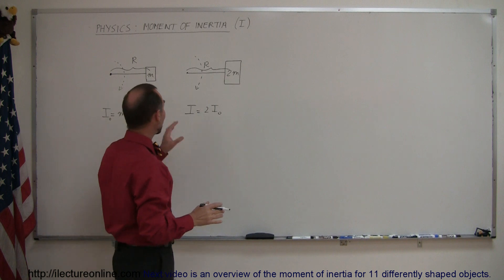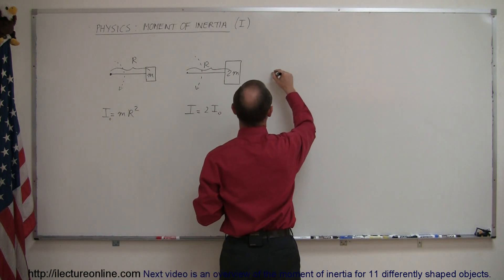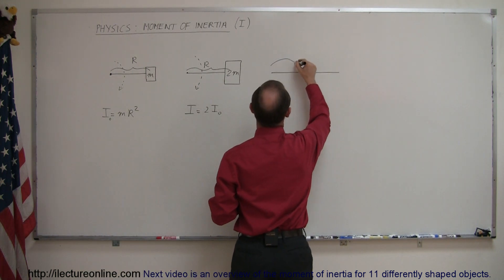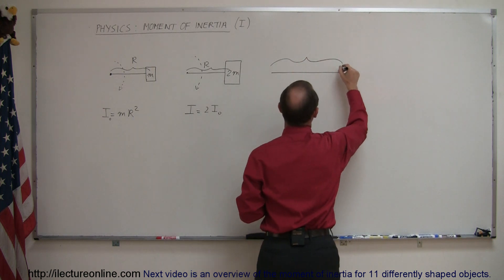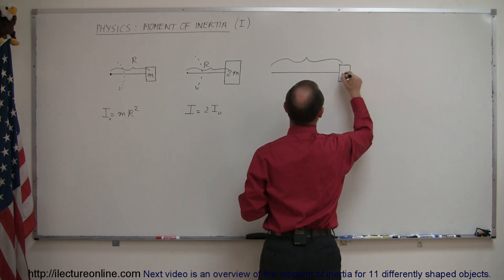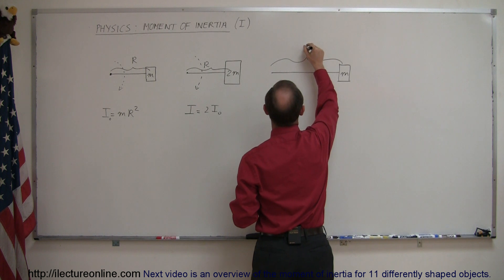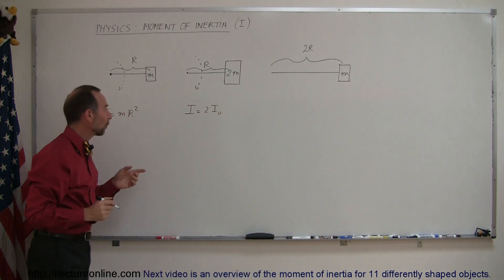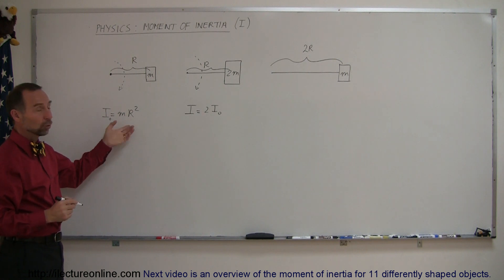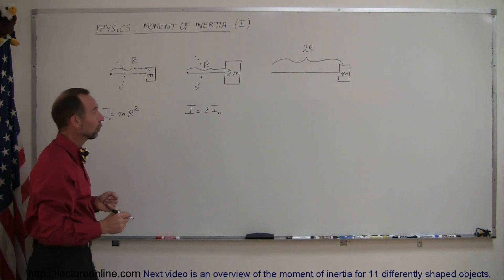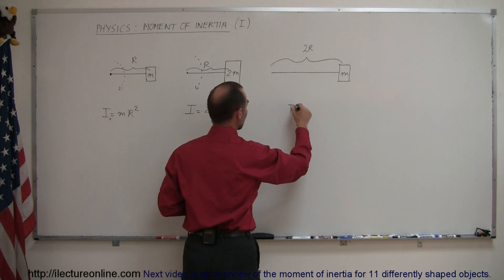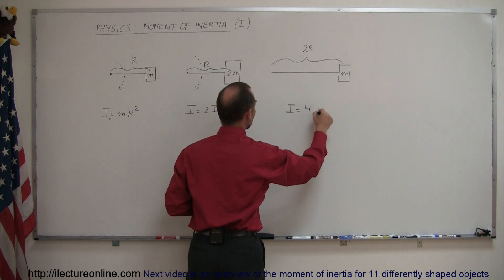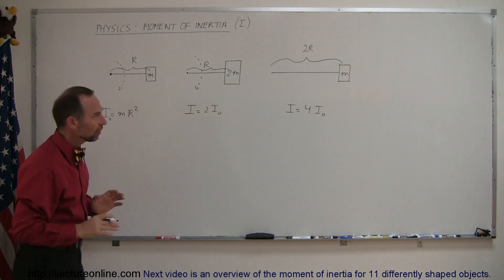On the other hand, if I had the same mass but now I make the distance twice as long as before, so now r is 2r, how would that change the moment of inertia this time? Well, since r is squared, 2r squared is 4r squared, so then we can say that the moment of inertia here, I is equal to 4 times the original moment of inertia.